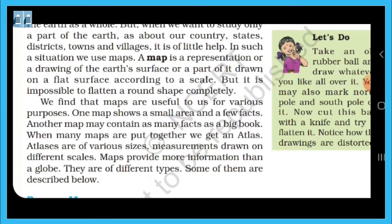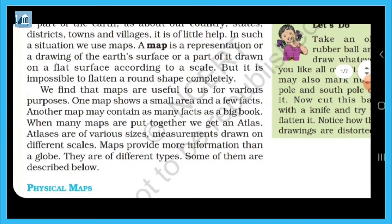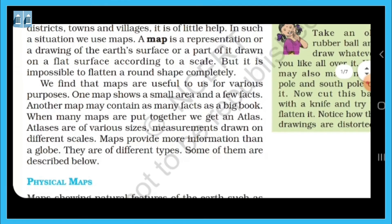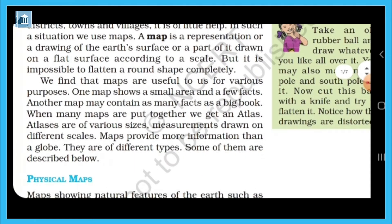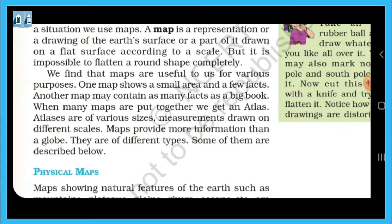It is impossible to flatten a round shape completely. We find that maps are useful to us for various purposes. One map shows a small area and a few facts, while another map contains many facts like a big book. When many maps are put together, we get an atlas.